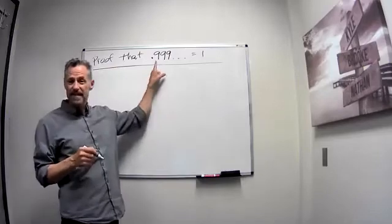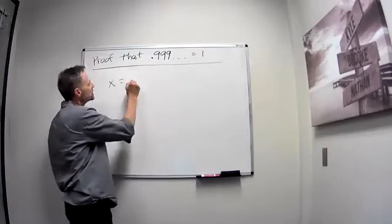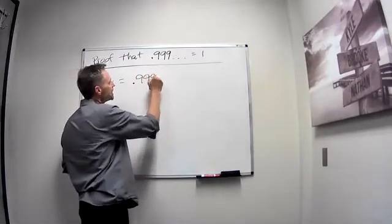So what I'm going to do first is take this 0.999 repeating and say that's equal to x. So x equals 0.999 dot dot dot.